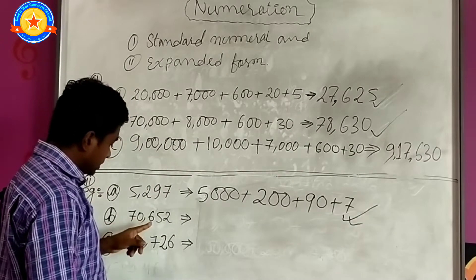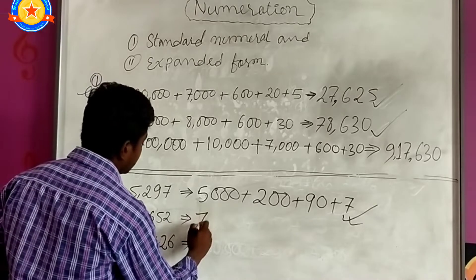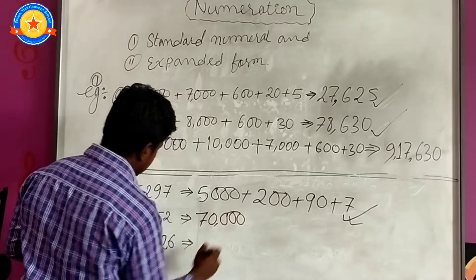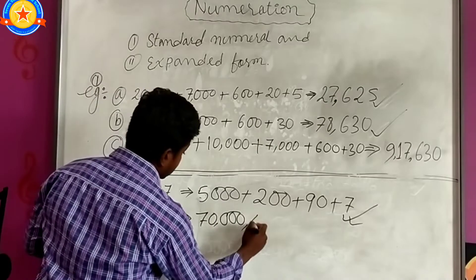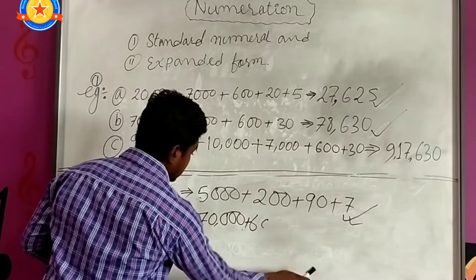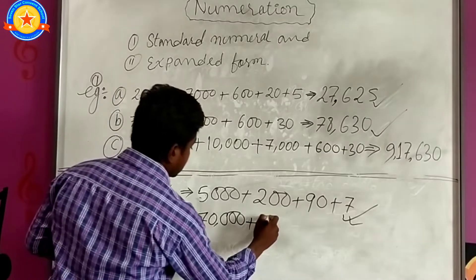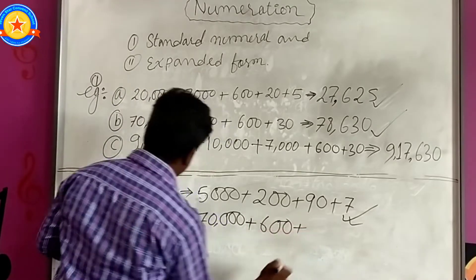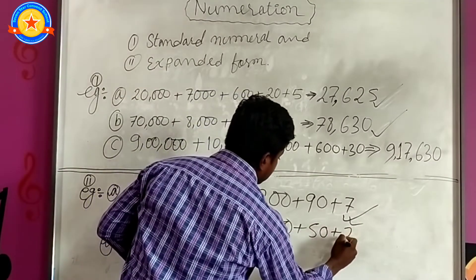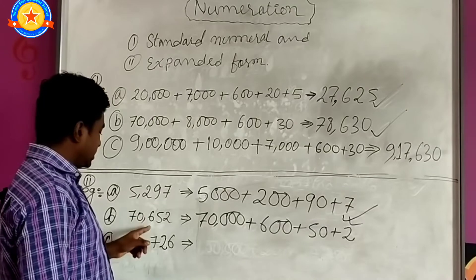Number B: we have 70,652. The answer will be? We have here first 70,000. We have here 600. So 600 plus 52, we have to add 50 plus 2. This is the answer of 70,652.